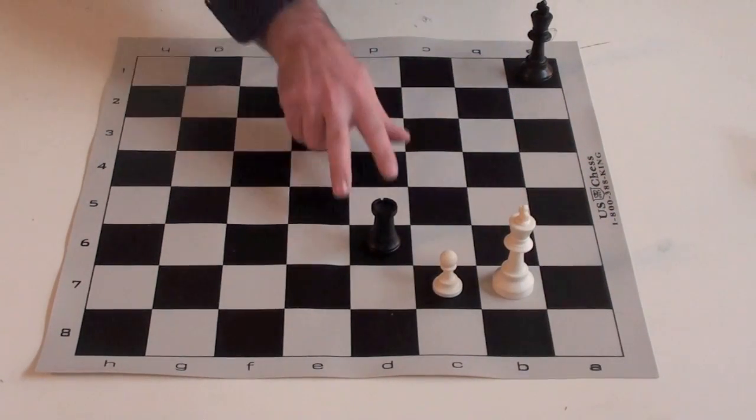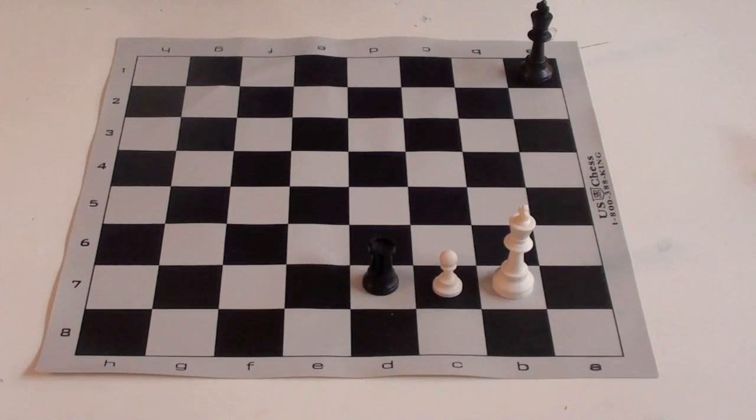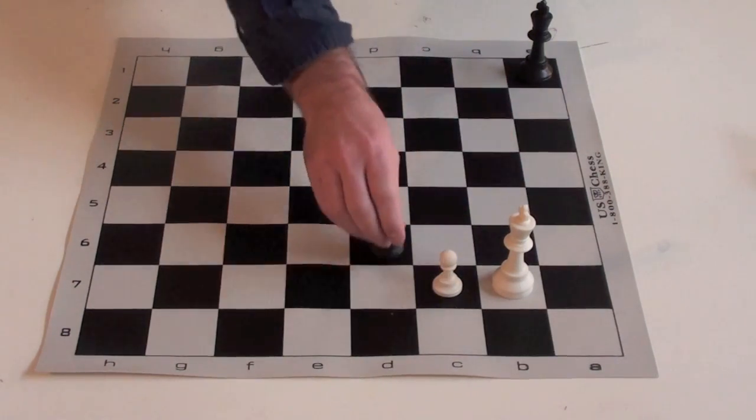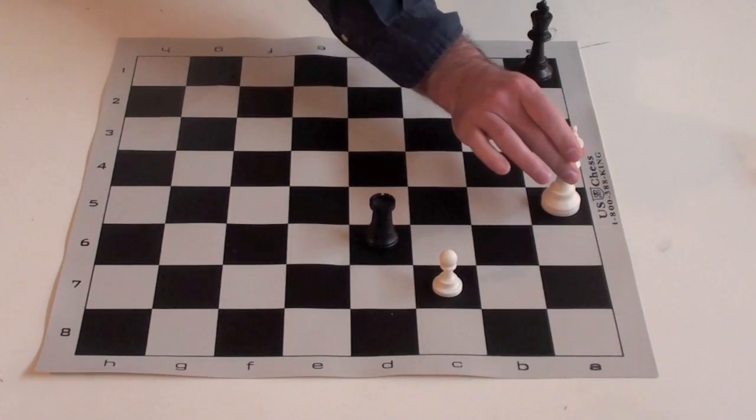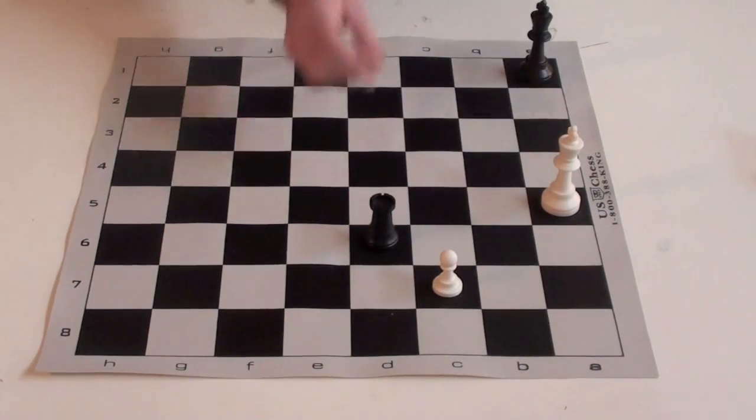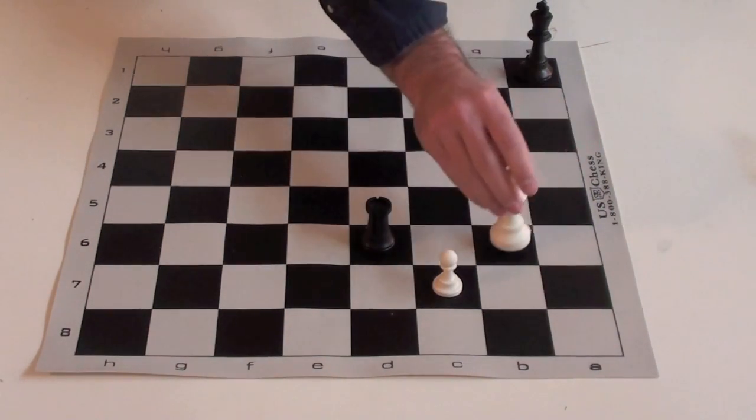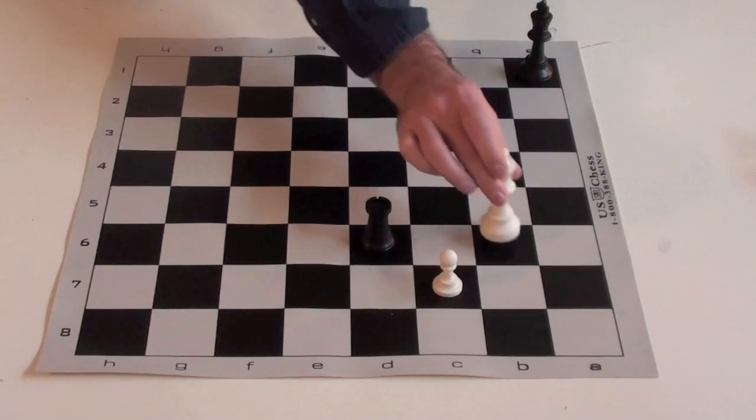If he goes here to b7, the rook is just going to pin the pawn and take the pawn on the next move for the draw. Same thing with a7. And if he comes over here to a5, he's going to lose the pawn. So he has b5 and c5.